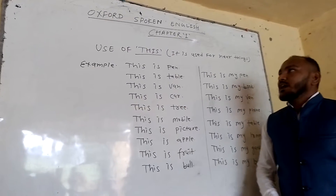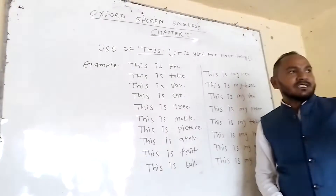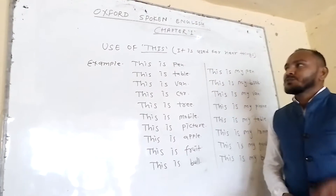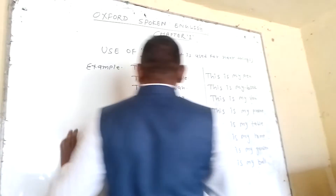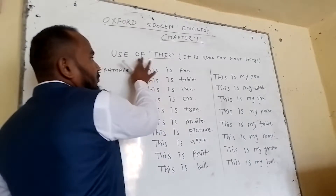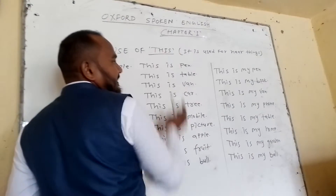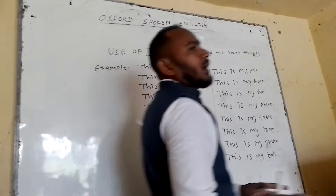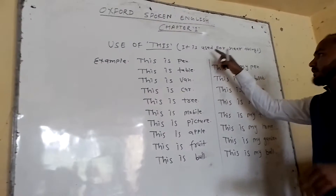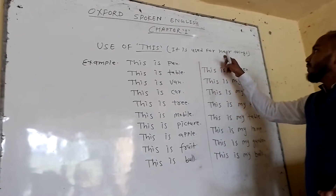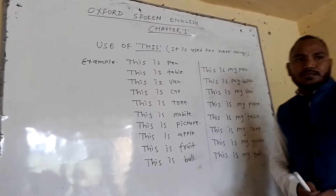I am starting from the first chapter. Today I am going to take up the use of 'this' — where it is used. It is used for nearby things.